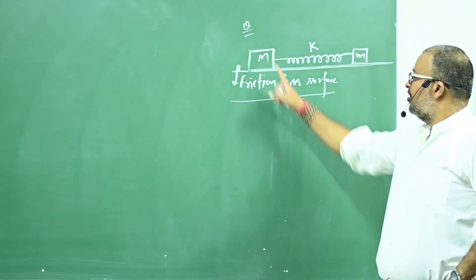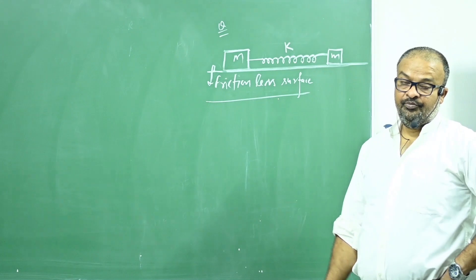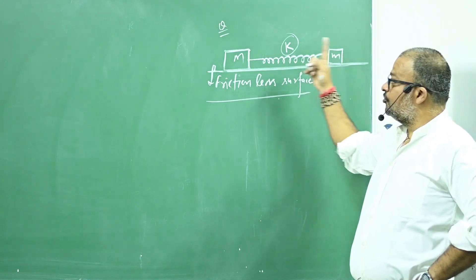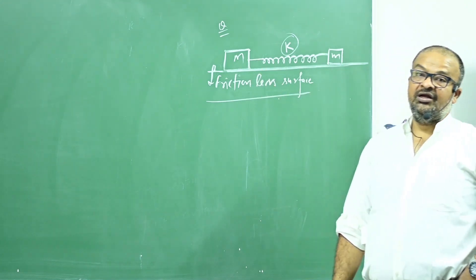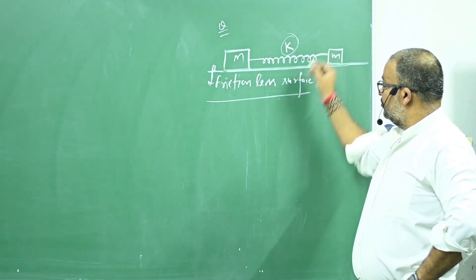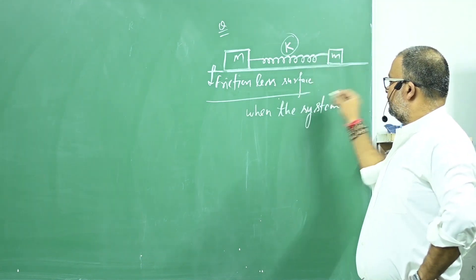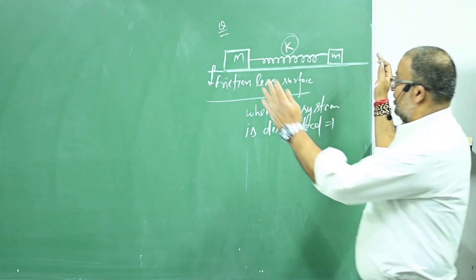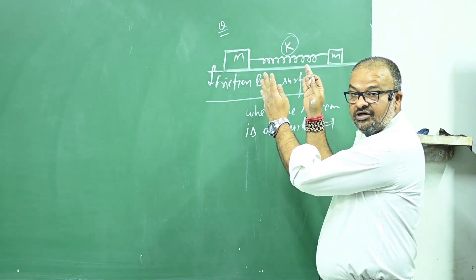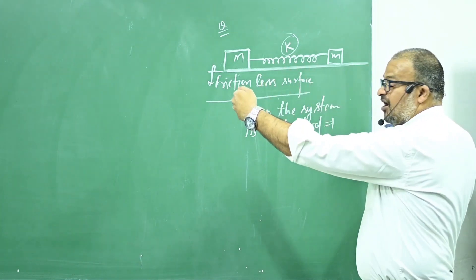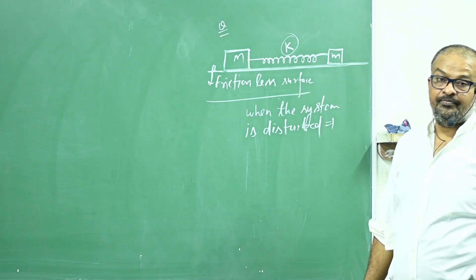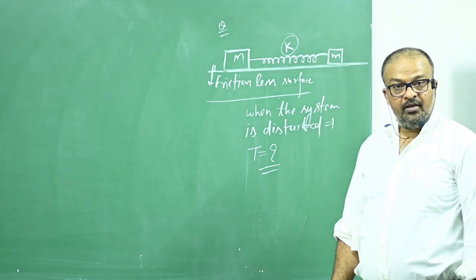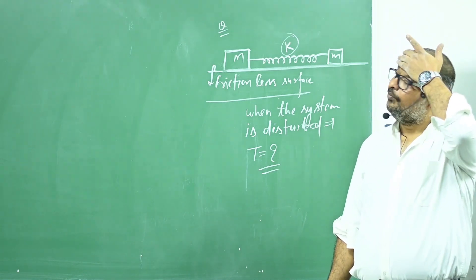This is the combination of two blocks and a spring, which are placed on a horizontal surface. The spring has a spring constant k, one block has mass small m, and one block has mass capital M. When the system is disturbed — meaning it is compressed by some distance and released, or expanded by some distance and then released — we have to find out the time period of oscillation of each block.